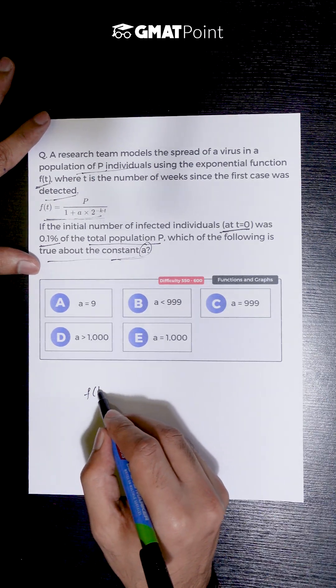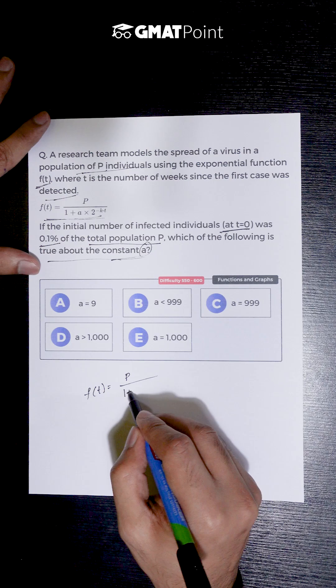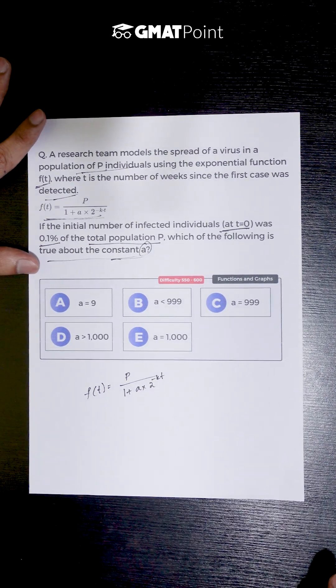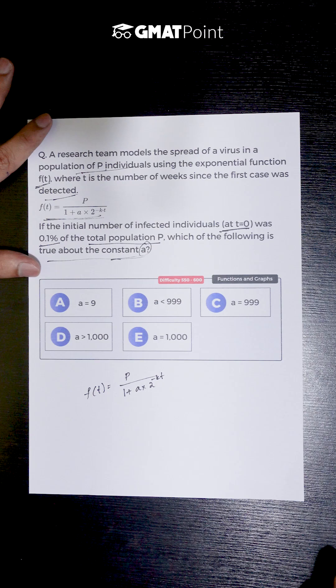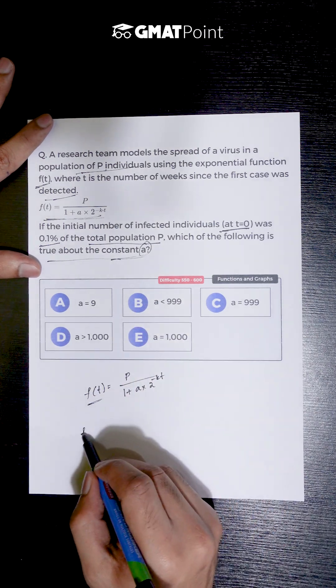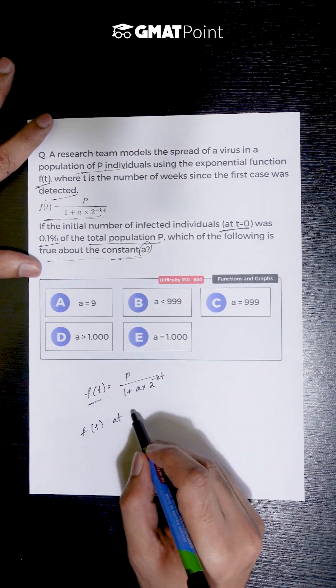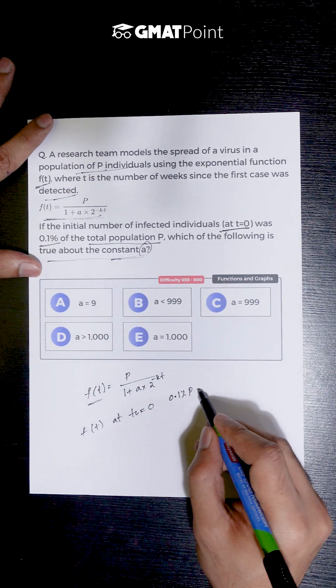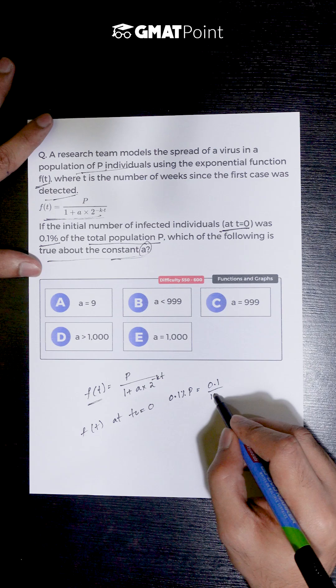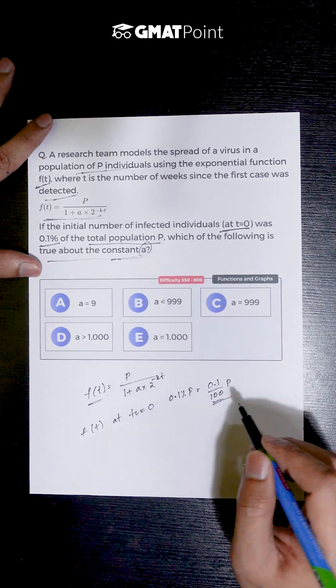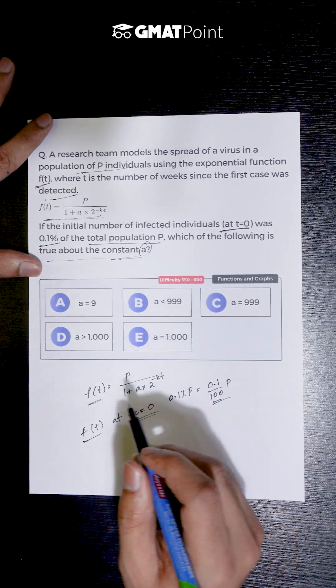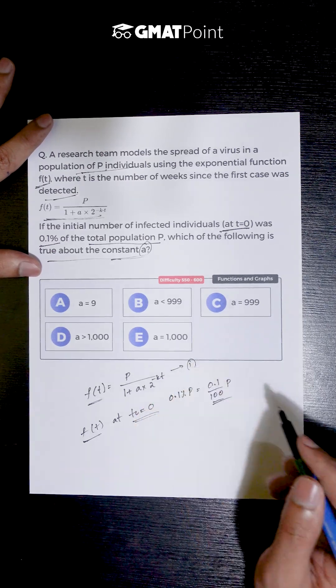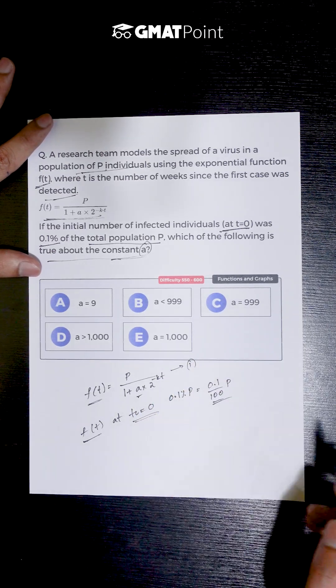So, the function f(t) is given to be P divided by 1 plus a times 2 to the power of minus k times t, and the value of f(t) at t=0 is given to be 0.1% of P, which is 0.1 divided by 100 times P. Now that we know the value of f(t) at t=0, let us substitute the value of t=0 in the function given and calculate the value of a.